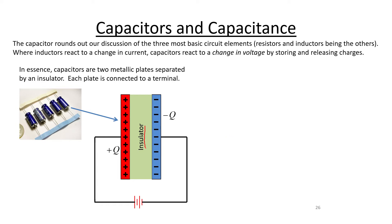The insulator in the middle can be something as simple as paper, teflon, or plastic. If you attach a battery to the terminals of a capacitor — imagine wires sticking out and connected to a battery — then conventional current flows in one direction, indicating the direction that positive charges would flow in the circuit. What happens is you get a buildup of positive charges on the left plate. At a physical level, it's actually taking electrons away from that plate.